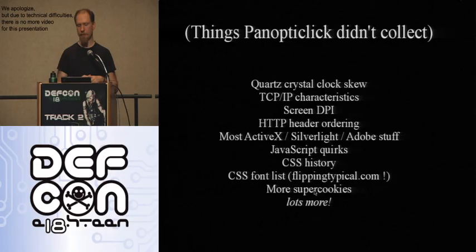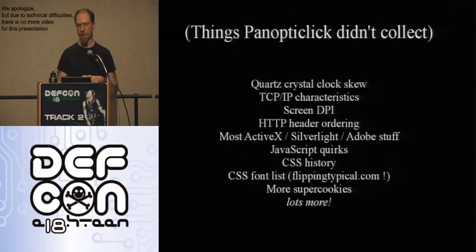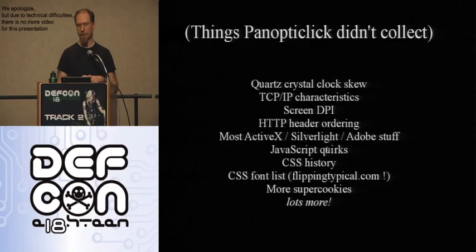The two most problematic measurements were plugins and fonts. There are a lot of things we didn't collect but which could make fingerprints even nastier. We've since seen companies in the private sector that sell fingerprinting systems doing far more than our eight measurements. One particularly nasty technique is measuring clock skew of a quartz crystal — how much faster or slower your computer's clock runs — which is hard to hide and unique to hardware rather than software. You can also measure characteristics of the OS's TCP/IP implementation, the order in which headers appear, and there's a lot in ActiveX, Silverlight, and Adobe libraries that could be exploited.